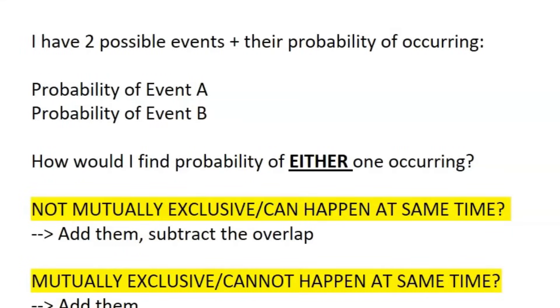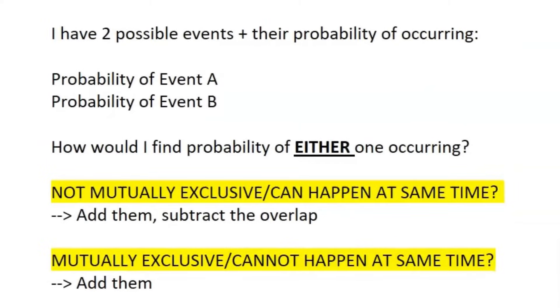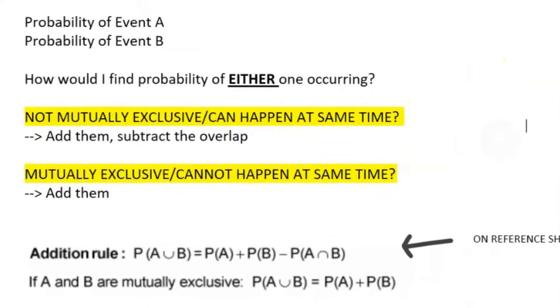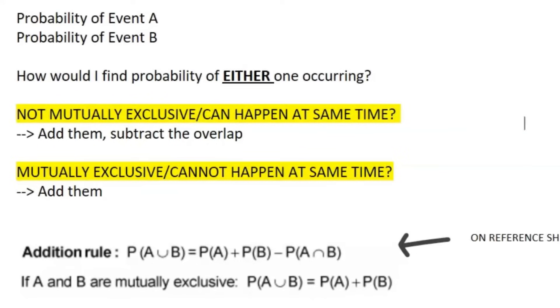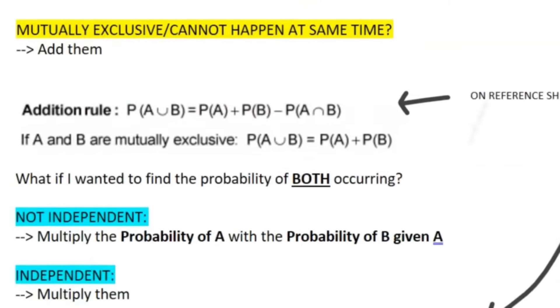So probability rules. Let's say I have two possible events and their probability of occurring is probability of event A and probability of event B. How would I find the probability of either one occurring? If these two events were not mutually exclusive or if both of these events could happen at the same time, I would add the probabilities and then subtract the overlap. If they were mutually exclusive or they cannot happen at the same time, I would simply add their probabilities. And these equations are on the reference sheet. The top one is not the mutually exclusive one.